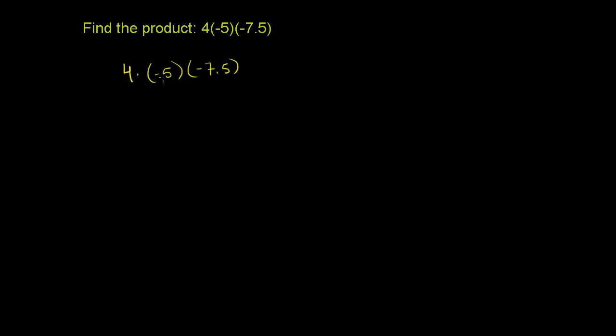So you have 4 times negative 5. 4 times 5 would be 20. Let me do this in a different color. So 4 times 5 would be 20, but we have a positive times a negative, so it's going to be a negative. Different signs mean we're going to have a negative.